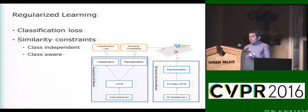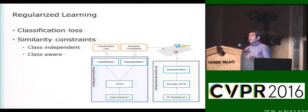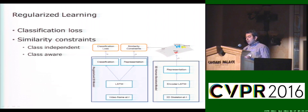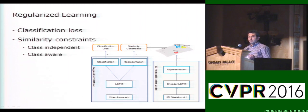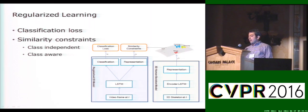To learn the video model, we define a classification loss and similarity constraints. The cross-entropy loss provides feedback about how well we classify actions, while the similarity constraints indicate how well the internal representation obtained from 2D videos compares to the 3D sequence models we have learned. We define two sets of constraints — class-independent and class-aware — which I will discuss later.